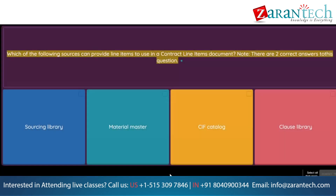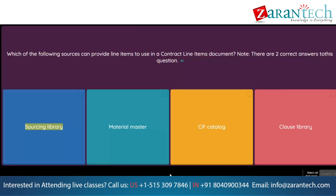Question: Which of the following sources can provide line items to use in a contract line items document? Note: there are two correct answers to this question. Option 1: Sourcing library. Option 2: Material master. Option 3: CIF catalog. Option 4: Clause library.